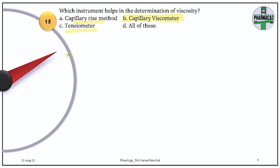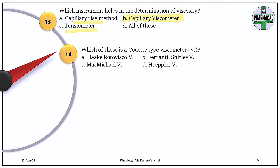Question 16. Which of these is a Kuwait-type viscometer? If you have gone through the lecture slides, I have provided flow charts describing different instruments for Newtonian and non-Newtonian systems. The Kuwait-type viscometer's proprietary name is the Mack Michael viscometer. You can find out what a Hoppler, Ferranti Shirley, and Hack roto viscometer are.